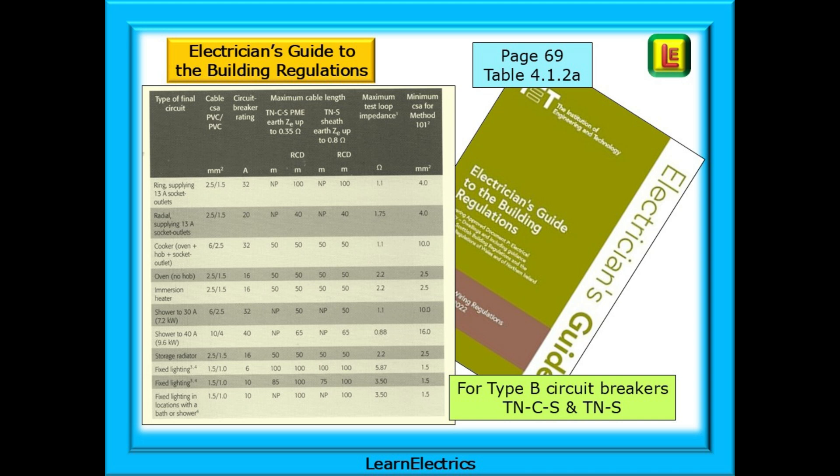If you have the Electrician's Guide to the Building Regulations, shortened to EGBR, take a look at Table 4.1.2a on page 69. Here is a table that shows all the common breaker sizes with data for Type B breakers, including cable sizes, circuit lengths, and most importantly for us, the maximum ZE for TNCS and TNS systems and the maximum ZS values. We can do something with these figures.